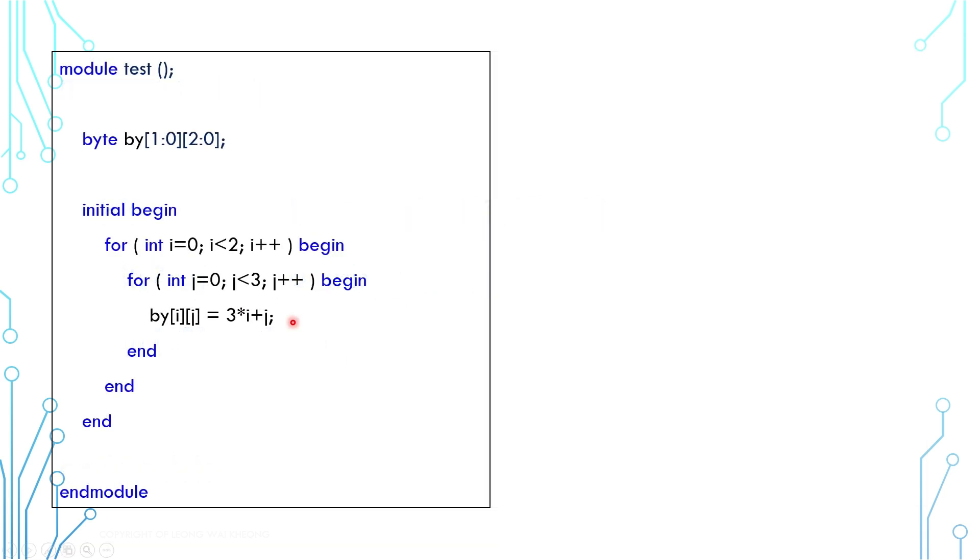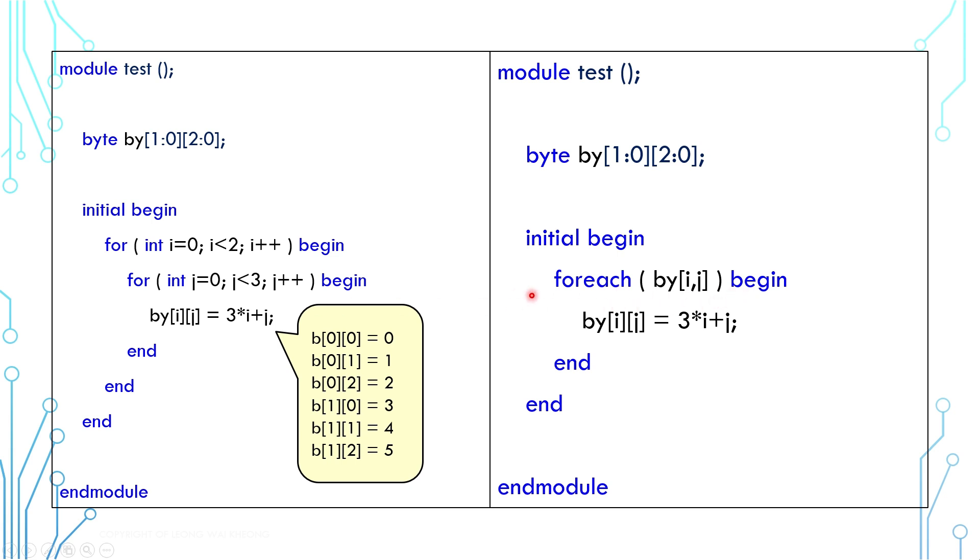For a 2-dimensional array, you need 2 for loops to go through every element. Remember the foreach loop that we have discussed earlier? It can support multi-dimensional arrays in a shorter manner. The foreach loop here is equivalent of the 2 for loops here.